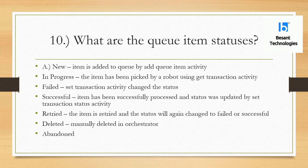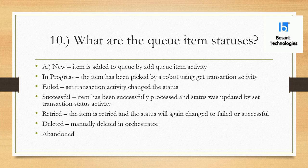Failed means that in your process there is an exception, and you use a Try-Catch block to catch that exception and manually use code to change the status of that particular item to Failed. For this we use the Set Transaction Status activity. Successful means the item processed without issues, and you use the Set Transaction Status activity again to change the status to Successful. Retried means you can specify the number of retry attempts while creating the queue itself or in the config file.